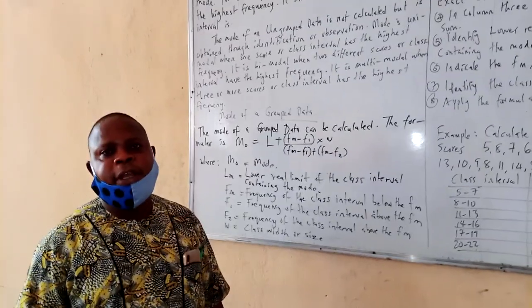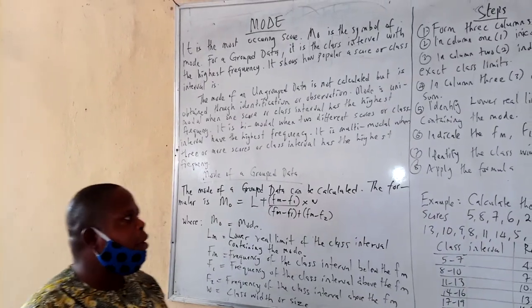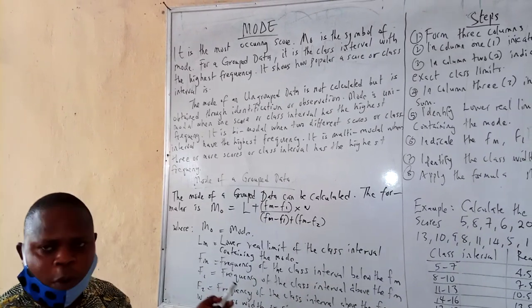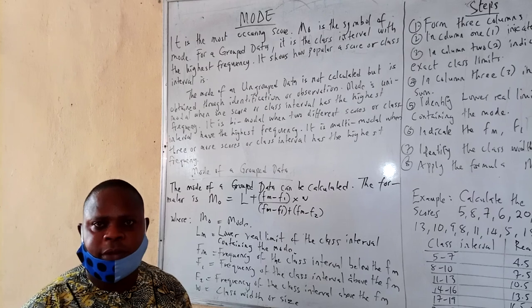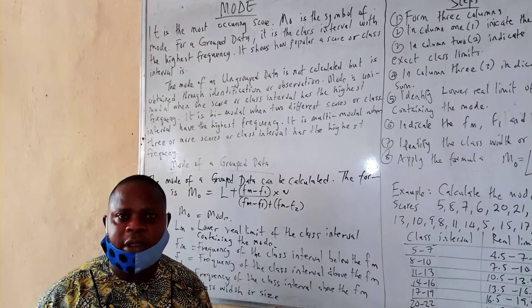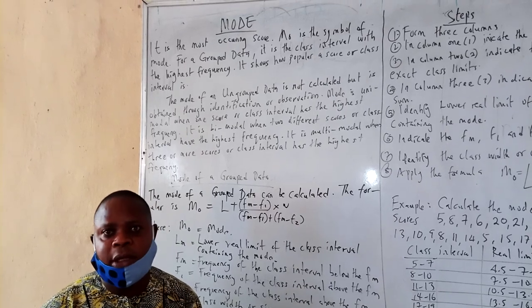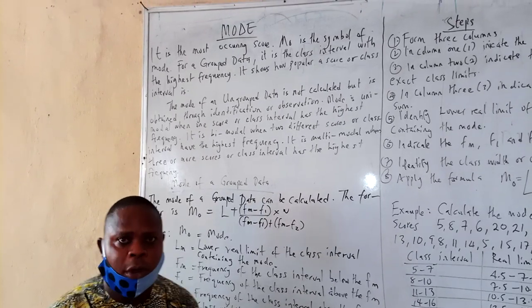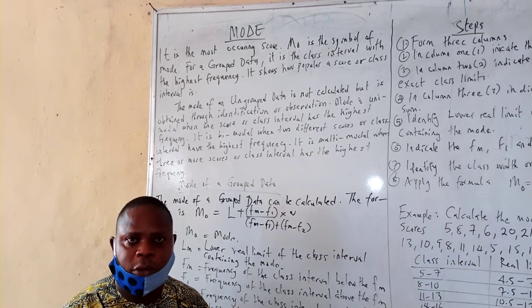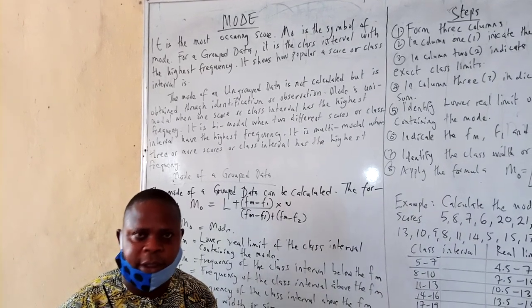Students, I hope you are staying safe at home. Alright, last time we talked about median as one of the measures of central tendency. Of course you remember that measures of central tendency has three indices: the mean, median, and mode. And so today we are going to talk about mode as the third measure of central tendency.